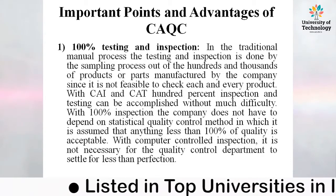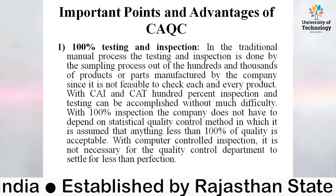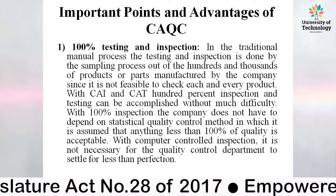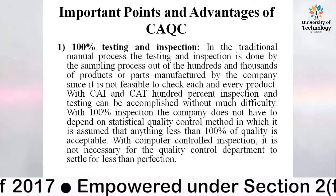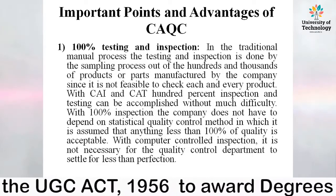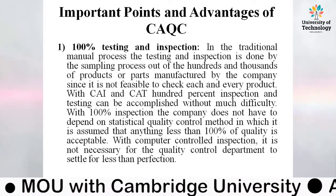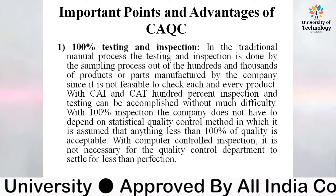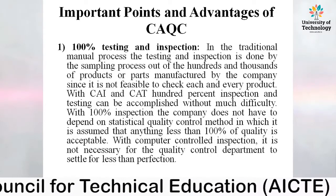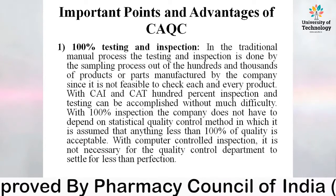Some basic important points and advantages of Computer Aided Quality Control. The first one is 100% Testing and Inspection. In the traditional manual process, testing and inspection is done by sampling out of hundreds and thousands of products, since it is not feasible to check each and every product. But with CAI and CAT, 100% inspection and testing can be accomplished without much difficulty. With computer controlled inspection, it is not necessary for the quality control department to settle for less than perfection.